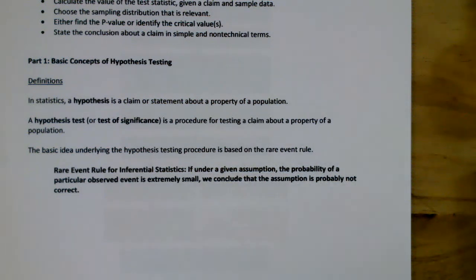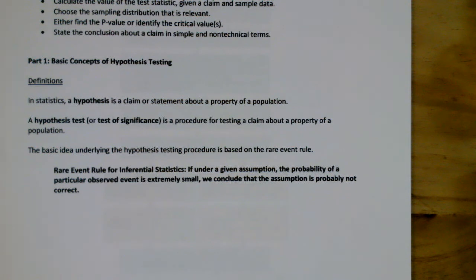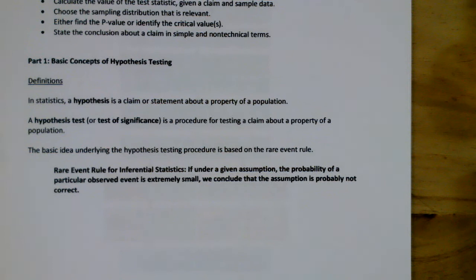A hypothesis test, or test of significance, is a procedure for testing the claim about a property of a population. The rare event rule for inferential statistics states: if, under a given assumption, the probability of a particular observed event is extremely small, we can conclude that the assumption is probably not correct. This is the other part of inferential statistics — in chapter 7 we covered confidence intervals; the other type is hypothesis testing.